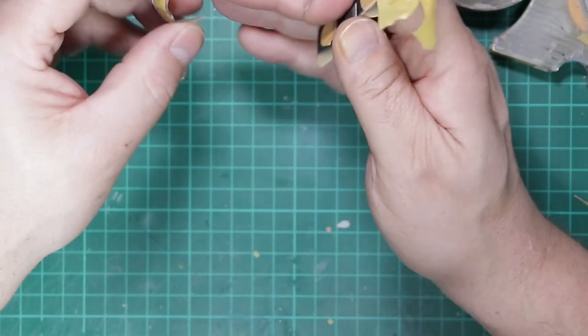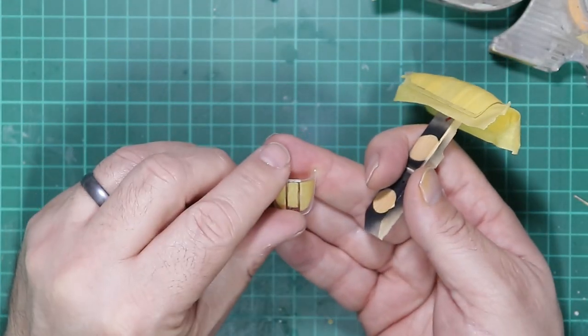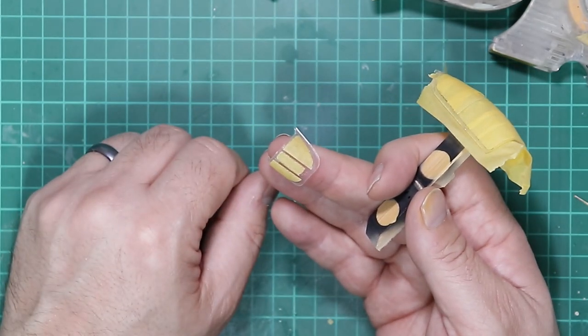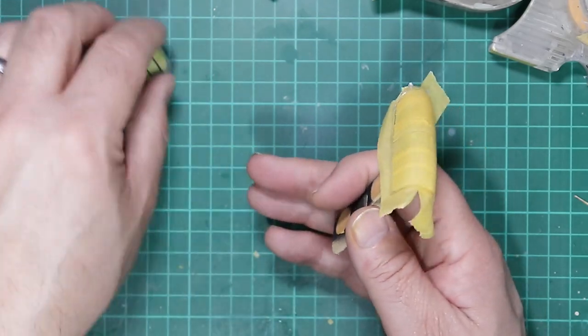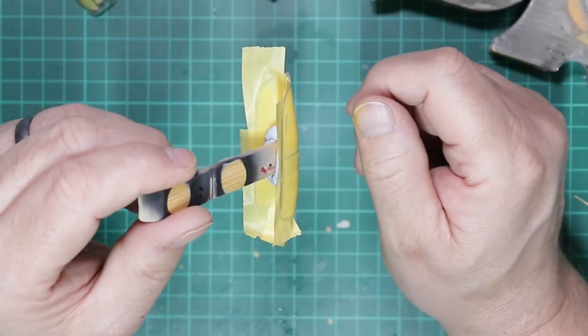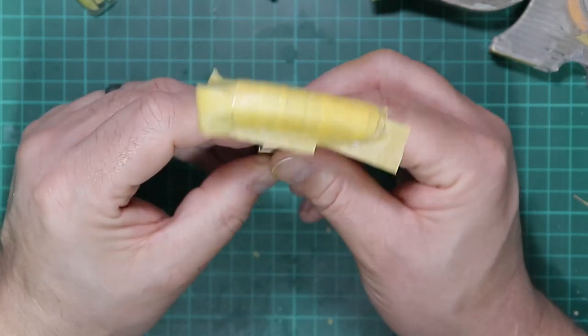We've masked the canopy up using Tamiya masking tape, burnished down with a cocktail stick and then cut out with a brand new knife blade. We've made a makeshift handle with a bit of blue tack and masked the inside of the canopy.